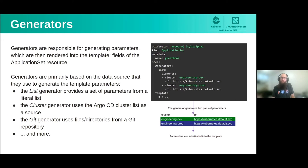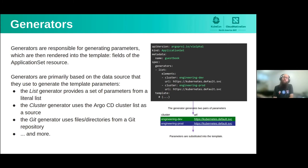Generators are responsible for generating parameters that are then rendered into the fields of the Application Set resource. They are usually named for and based on the particular external data sources they pull from. For example, the list generator is a literal list of values defined within the Application Set resource itself. The cluster generator generates values based on clusters defined in Argo CD. And the Git generator uses files or directories from a Git repository to generate template parameters.